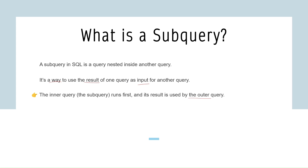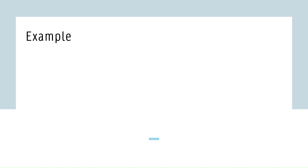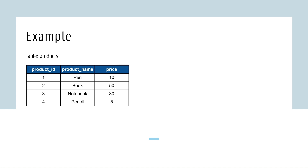Let's understand this with an example. Say you have a products table with three columns: product ID, product name, and the price of the product. Now you want to find all the products cheaper than the average price.